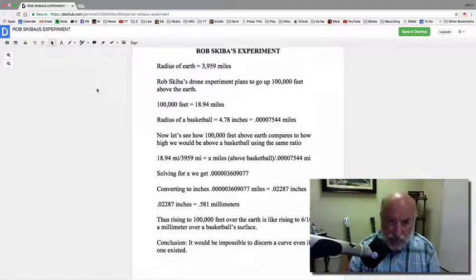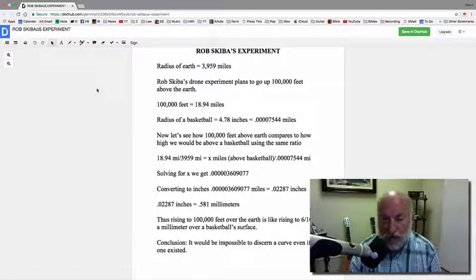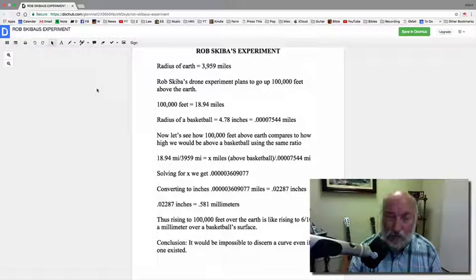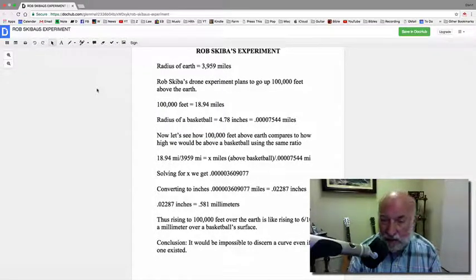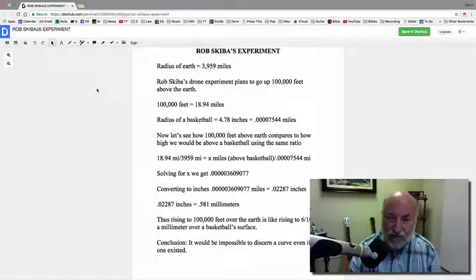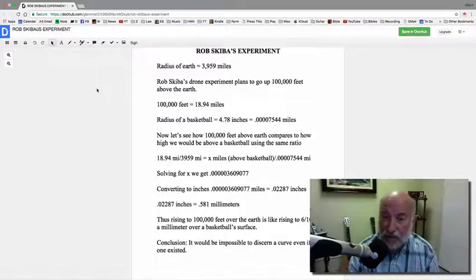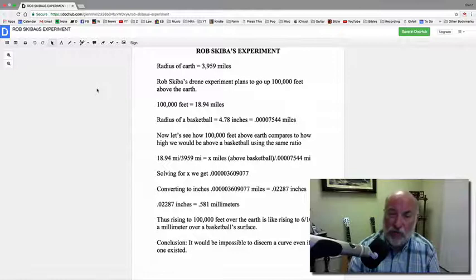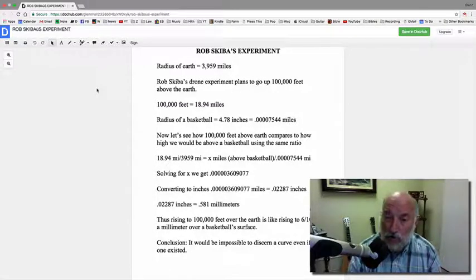Then I determined, let's see how 100,000 feet above the Earth would compare to how high we would be above a basketball if we use that same ratio. So basically, I just set up a simple algebraic equation. And that would be 18.94 miles is to 3,959 miles. So 18.94 divided by 3,959 equals X miles above the basketball divided by the radius of the basketball in miles. Now, solving for X, we get 0.00003609077. And converting now to inches, that would be miles because all of these calculations above were in miles. So we convert this to inches and we get 0.02287 inches.